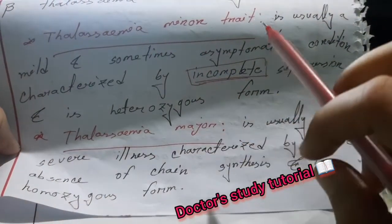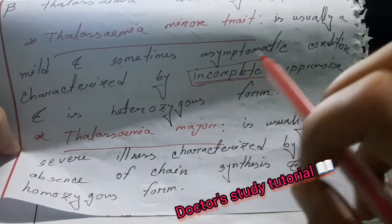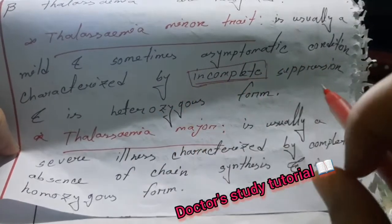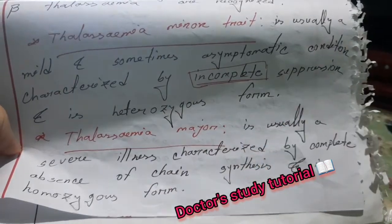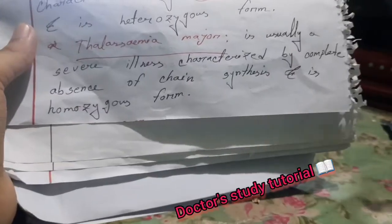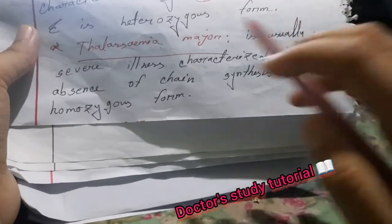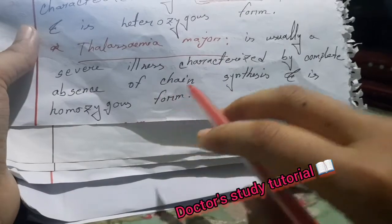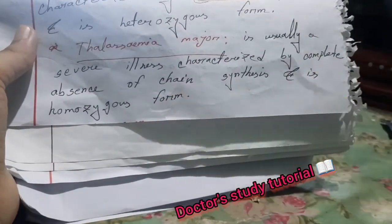Thalassemia minor is usually a mild and sometimes asymptomatic condition characterized by incomplete suppression of chain synthesis and is the heterozygous form. Thalassemia major is usually a severe illness characterized by complete absence of chain synthesis and is the homozygous form.